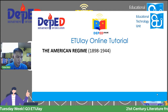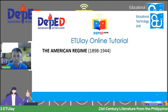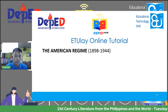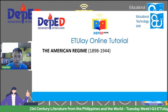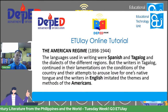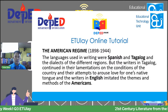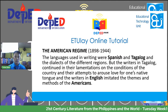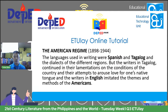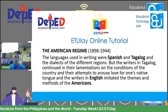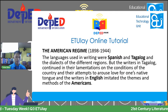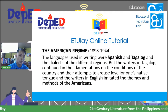During 1898 to 1944, the Americans came here to the Philippines and they also influenced our literature. The languages used in writing during this time were Spanish and Tagalog still, and the dialects of the different regions. But the writers in Tagalog continued their lamentations on the conditions of the country and their attempts to arouse love for the native tongue. And the writers in English imitated the themes and methods of the Americans.